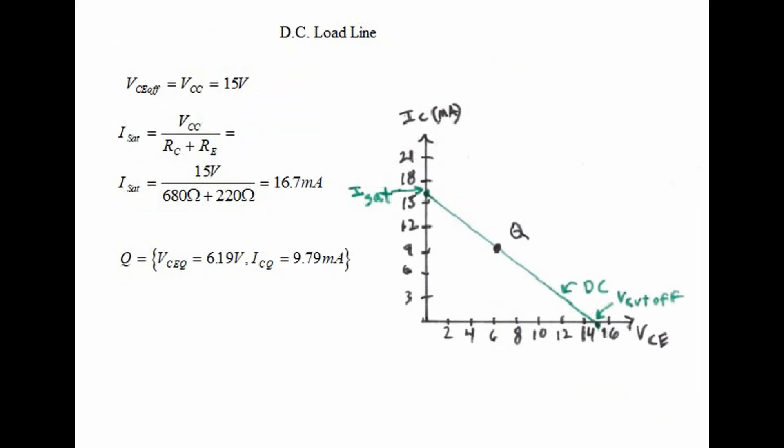The calculations we have just completed will be used to create the DC load line as shown in the diagram above. Take VCE cutoff which is 15 volts and plot that on the x-axis, and take current saturation which is 16.7 milliamps and plot on the y-axis. Connect these two points with a straight line.